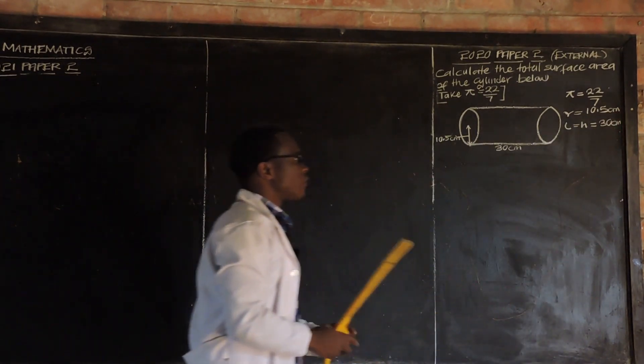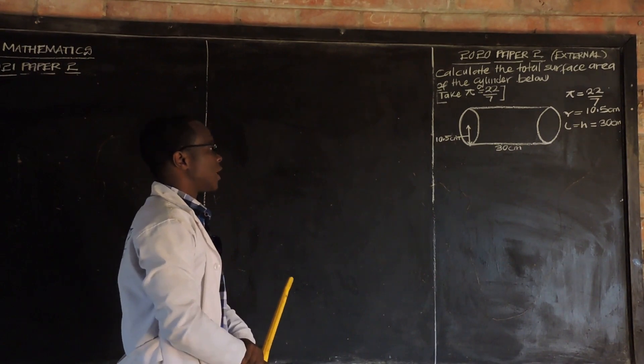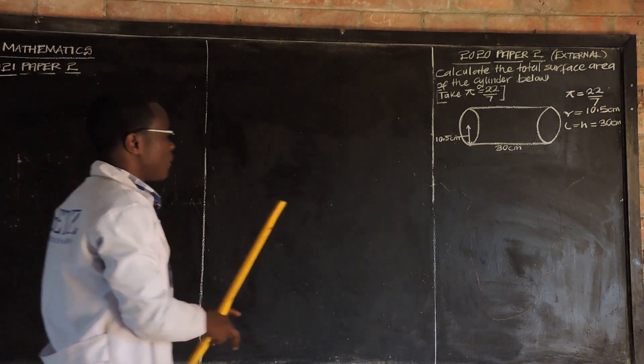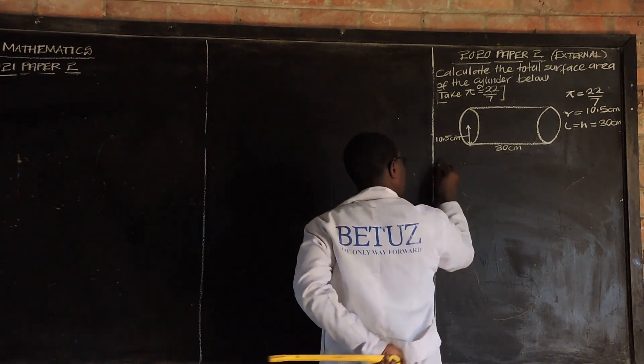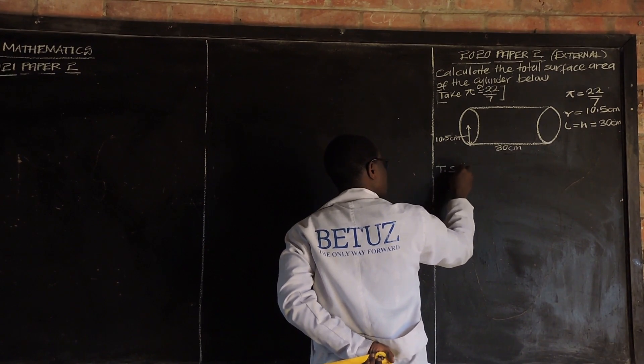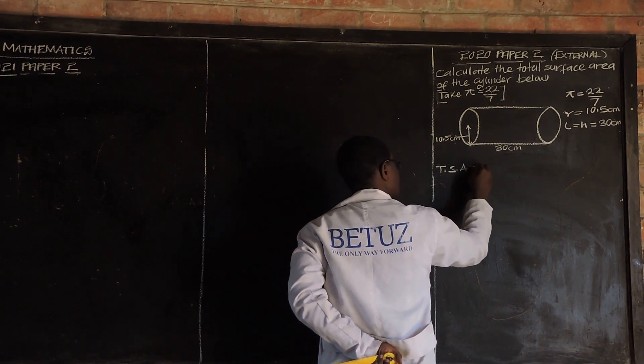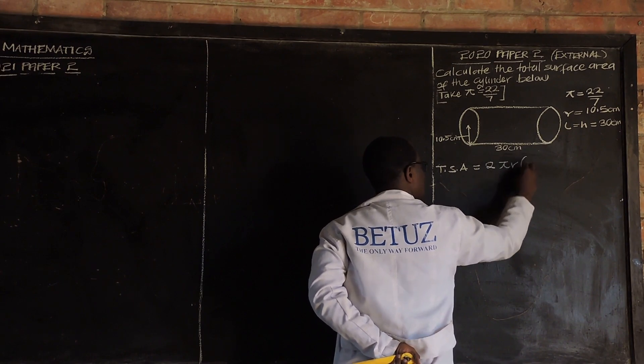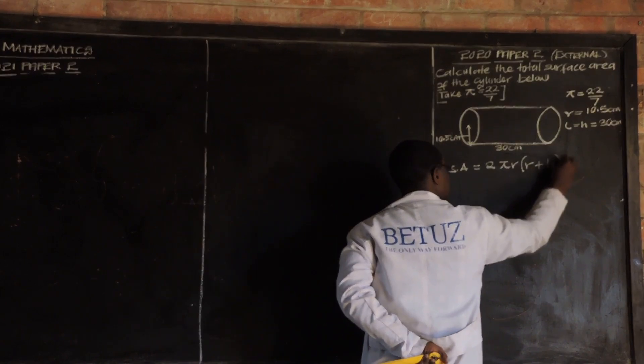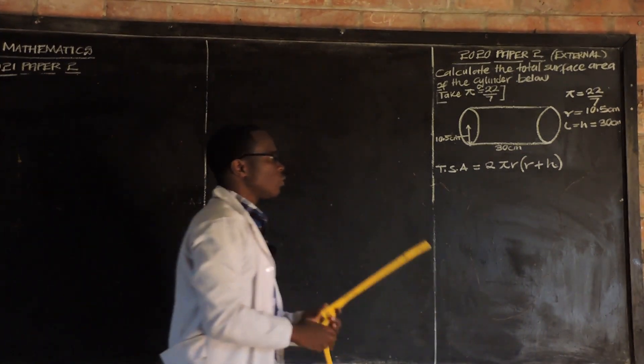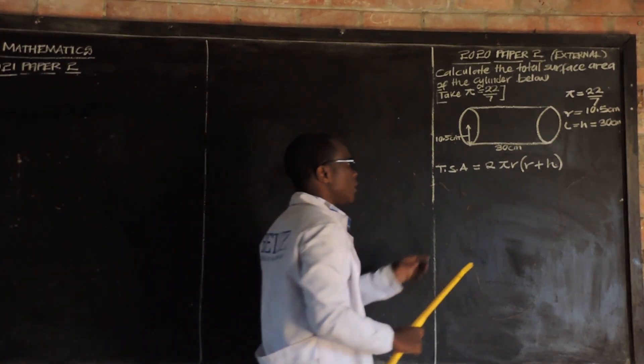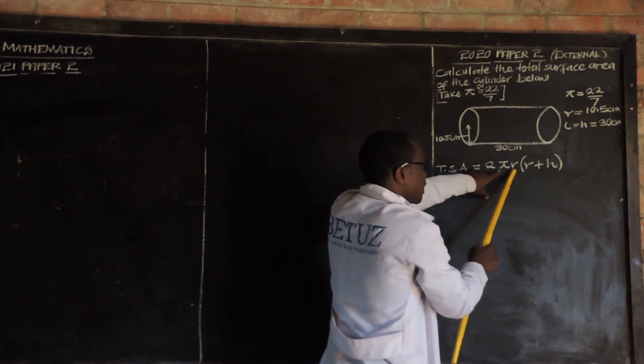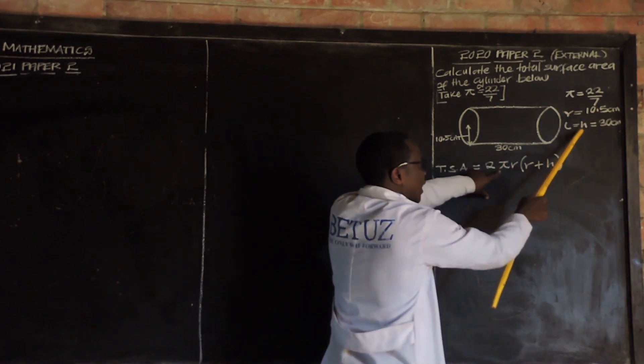I've been told to use this information to find the total surface area for this particular cylinder. First and foremost, we're going to write the formula, which is given by total surface area is equal to 2πr in brackets, radius plus height.